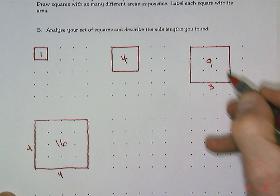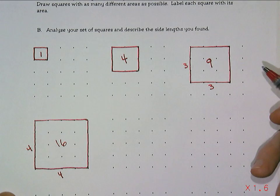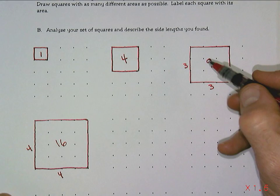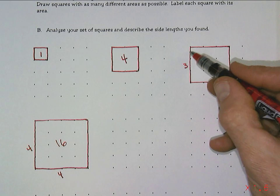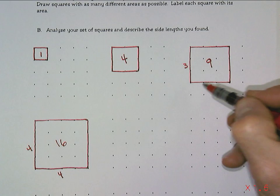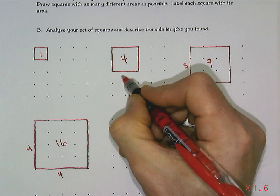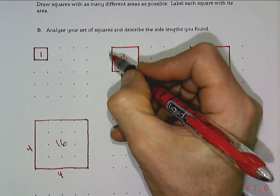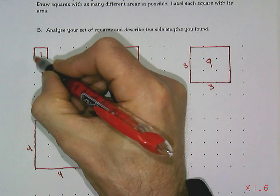Going back to the previous ones, we had three times three. Make sure you're counting the spaces — three by three — and then two by two, and one by one.